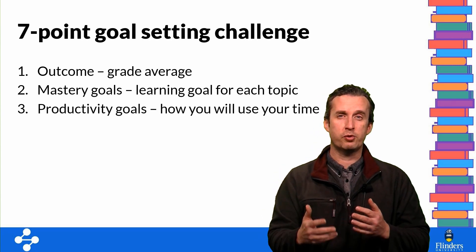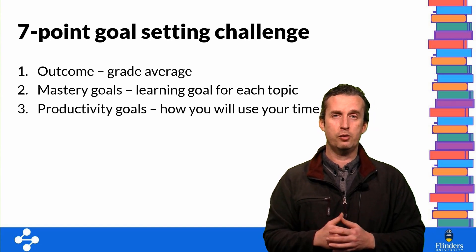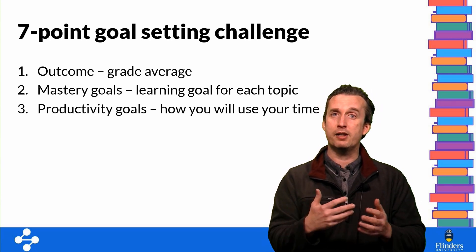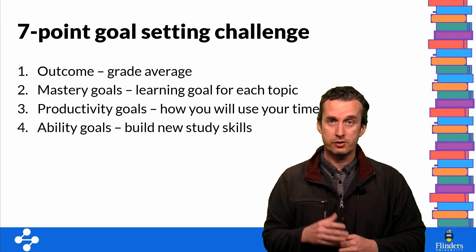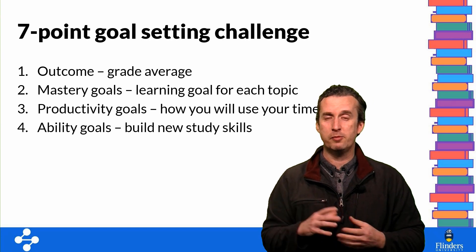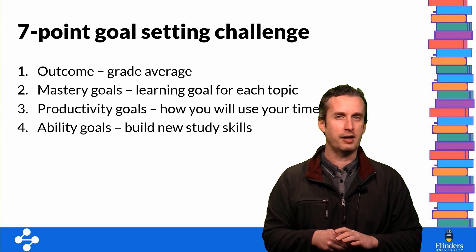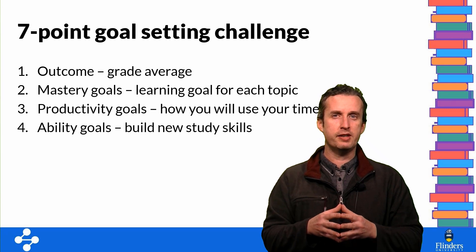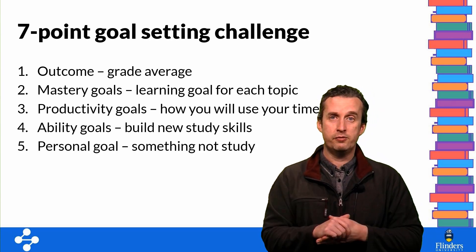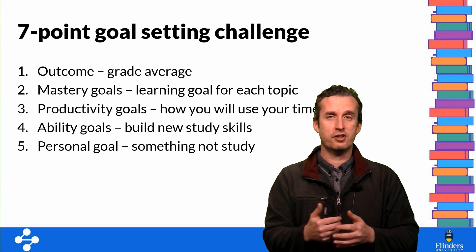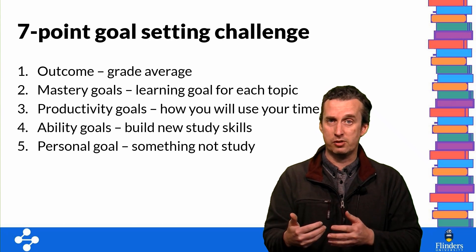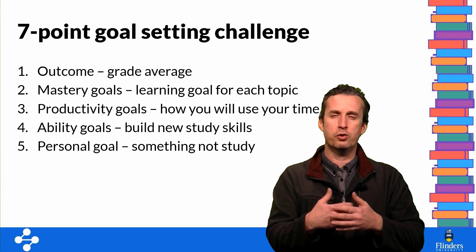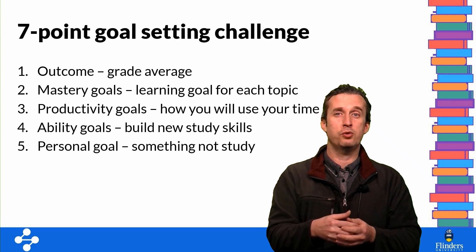Third, set some productivity goals — these relate to how you're going to use your time. How will you structure your day so that you get all your assignments done, all your revision done, and find the right balance between study, work, and your private life? Fourth, set some ability goals. There might be areas of study you don't think you're particularly good at — maybe referencing, structuring assignments, or learning things by rote. Identify at least one area you'd like to improve on over the course of the semester. Fifth, set a personal goal. You've got activities outside of your studies, and we know that setting goals in our personal lives can lead to improvements in our professional and study lives as well. Pick an interest, a hobby, or an aspect of your life outside of study, and set a goal in relation to that.